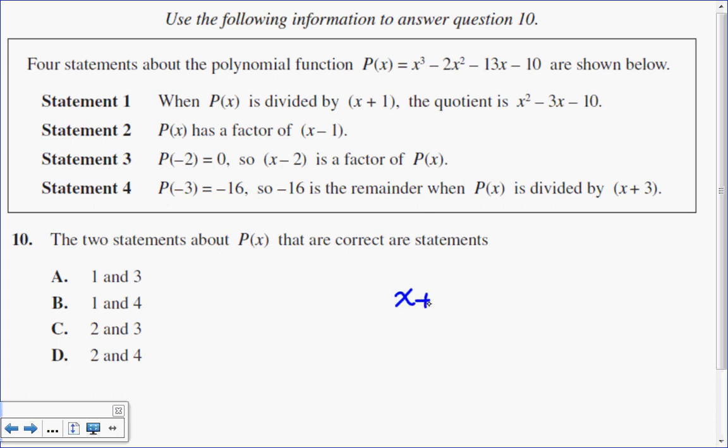I'm going to go x plus 1 divided into x cubed minus 2x squared minus 13x minus 10. So I start with my leading coefficients. x cubed divided by x is x squared, and then I multiply. x squared times x is x cubed.